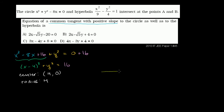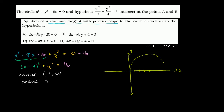Let me draw the horizontal x-axis and the y-axis. The center is at 4 comma 0, and with a radius of 4, the circle looks like this — the top half curves up and the bottom half curves down. So that's our circle.